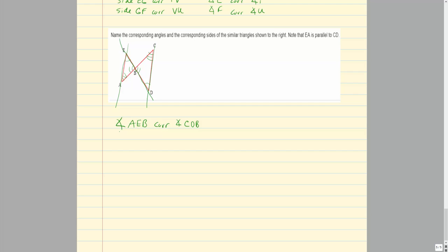For sides: side AE corresponds to side CD, and side CB corresponds to side AB — we want to make sure corresponding vertices are listed in matching order. Side DB corresponds to side EB, with D corresponding to E. Direction and starting vertex must be consistent so the correct angle vertices are matched throughout.